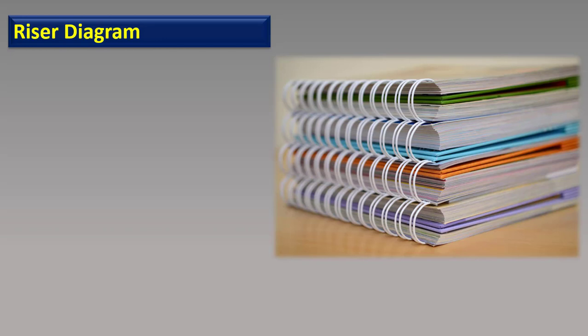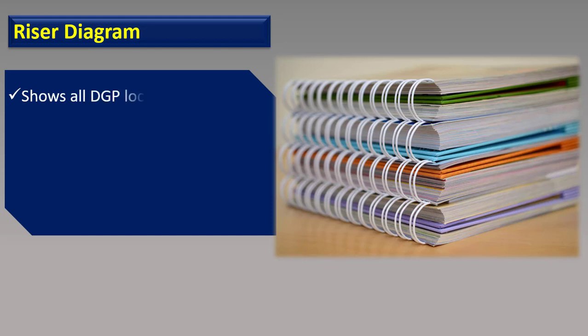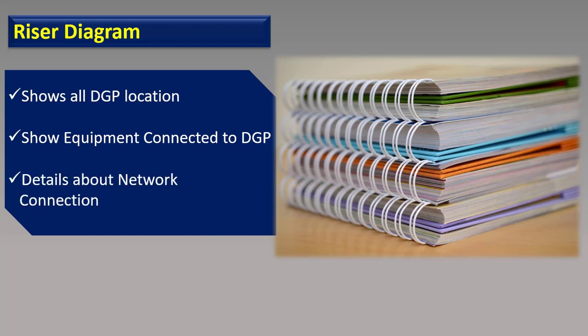A riser diagram provides an overall picture of the BMS system. It shows the locations of all the DGPs installed in a building, the equipment connected to each DGP, and complete information about the network connections of all these DGPs.